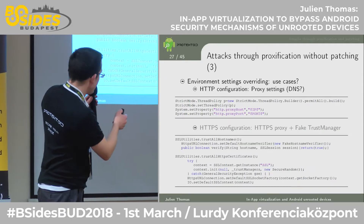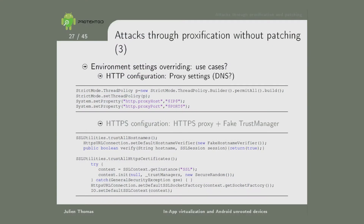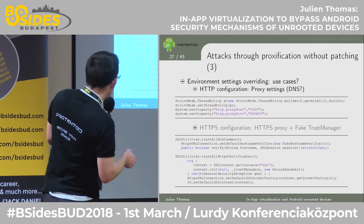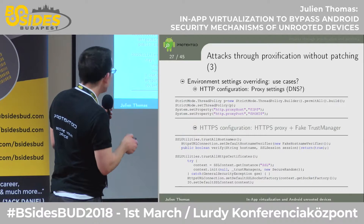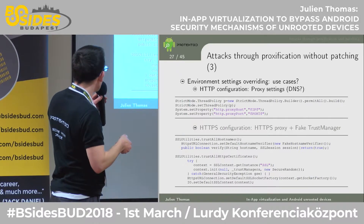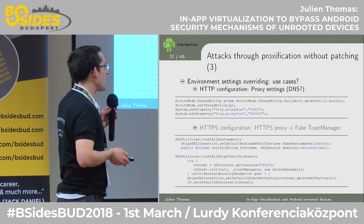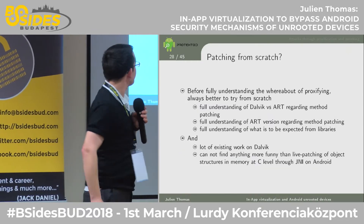Concretely: if you just set the proxy host and proxy port system properties, you redirect all traffic of the hosted apps to a specific address by default — nothing else to do. And if you preset the HTTPS configuration by setting the default SSL socket factory of the hosted process to one that answers 'is it a valid hostname? yes, true' and 'do I trust the certificate? yes, trust everything,' well, you can access all of that.